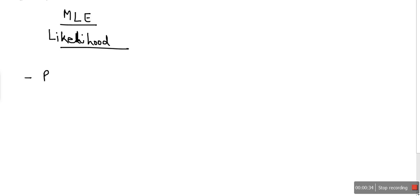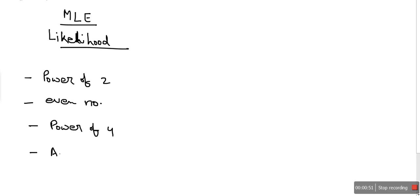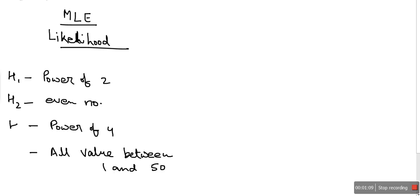These hypotheses are h1, h2, h3, and h4. The data we will be getting will be in the range of 1 to 50. We need to check for a given data set what are the chances of that data set belonging to a particular hypothesis.